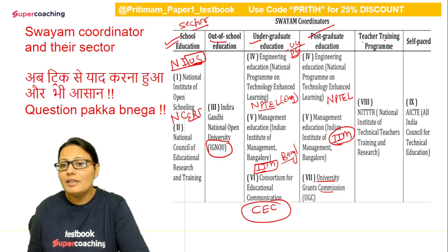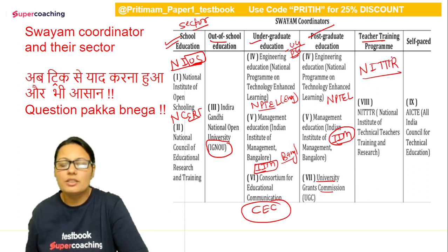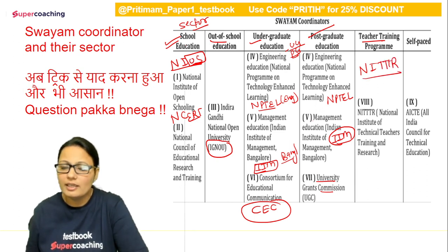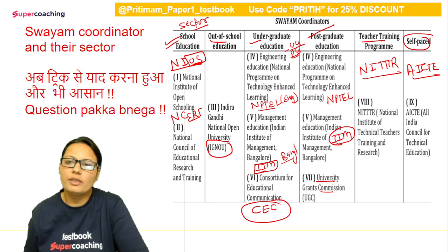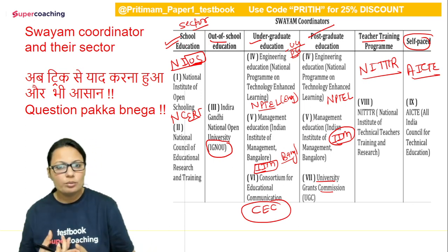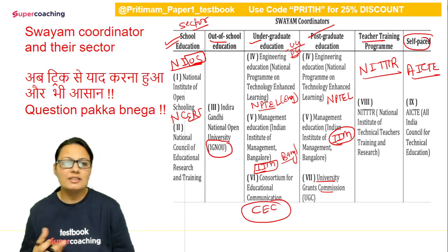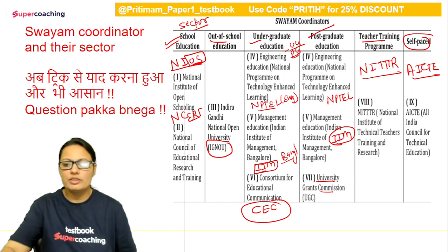Teacher Training की बात करूँ तो एक ही नाम उठके आता है — NITTTR: National Institute of Technical Teacher Training and Research। और Self-Paced की बात करते हैं तो AICTE — All India Council for Technical Education। तो SWAM के coordinators और कौन से sector में वे deal करते हैं — यह आपको पता होना चाहिए।